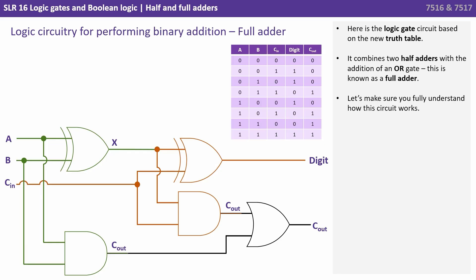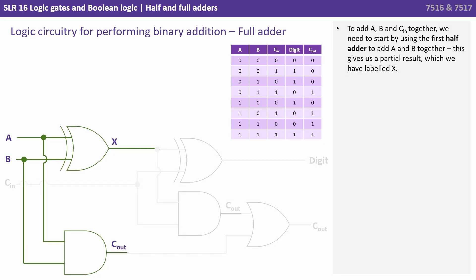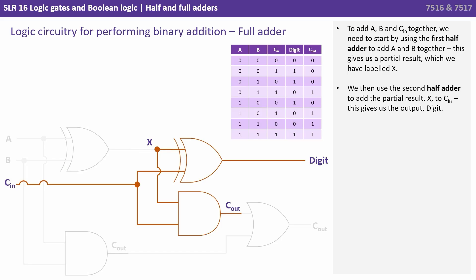Let's make sure you fully understand how this circuit works. To add a, b and c in together we need to start by using the first half adder to add a and b together which gives us a partial result which we've labelled x. We then use the second half adder to add the partial result x to c in and this gives us the output digit.